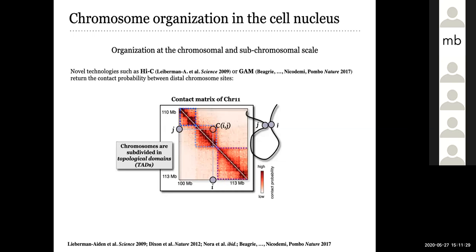About the organization of the cell nucleus, there is much more than this. Only 10 years ago, essentially in 2009, there was invented a new technology called Hi-C — not a microscopy technology, but a technology based on the sequencing of the DNA. Some of these technologies have been developed also within our group, in particular the GAM technology. These technologies allow us to obtain the so-called contact matrices of chromosomes.